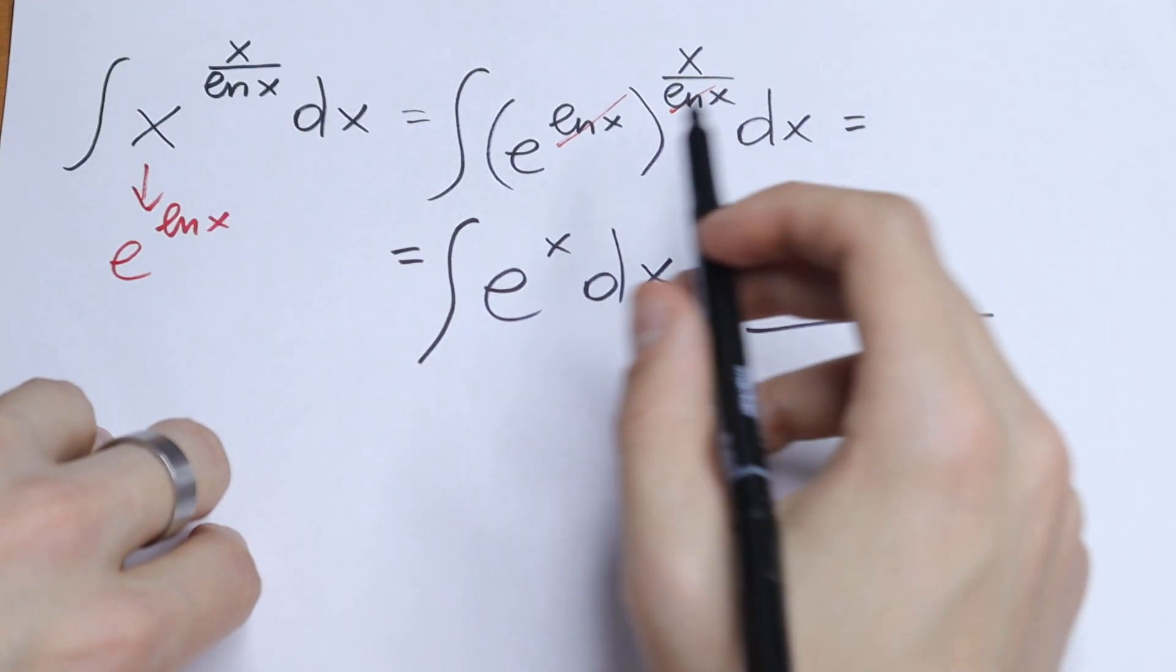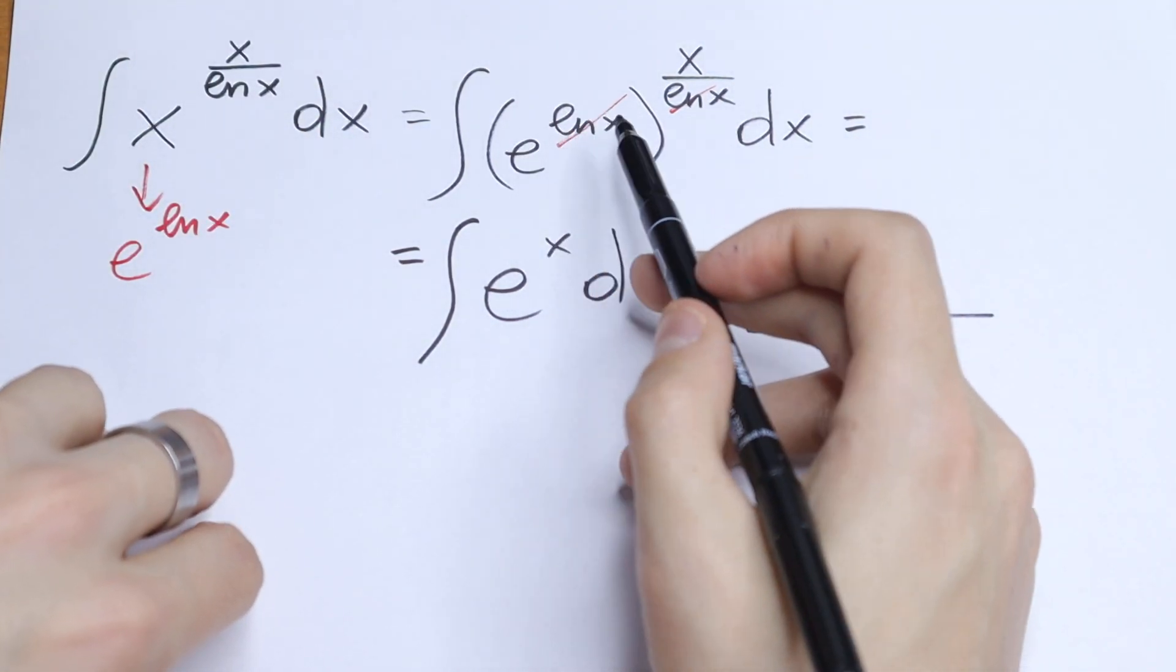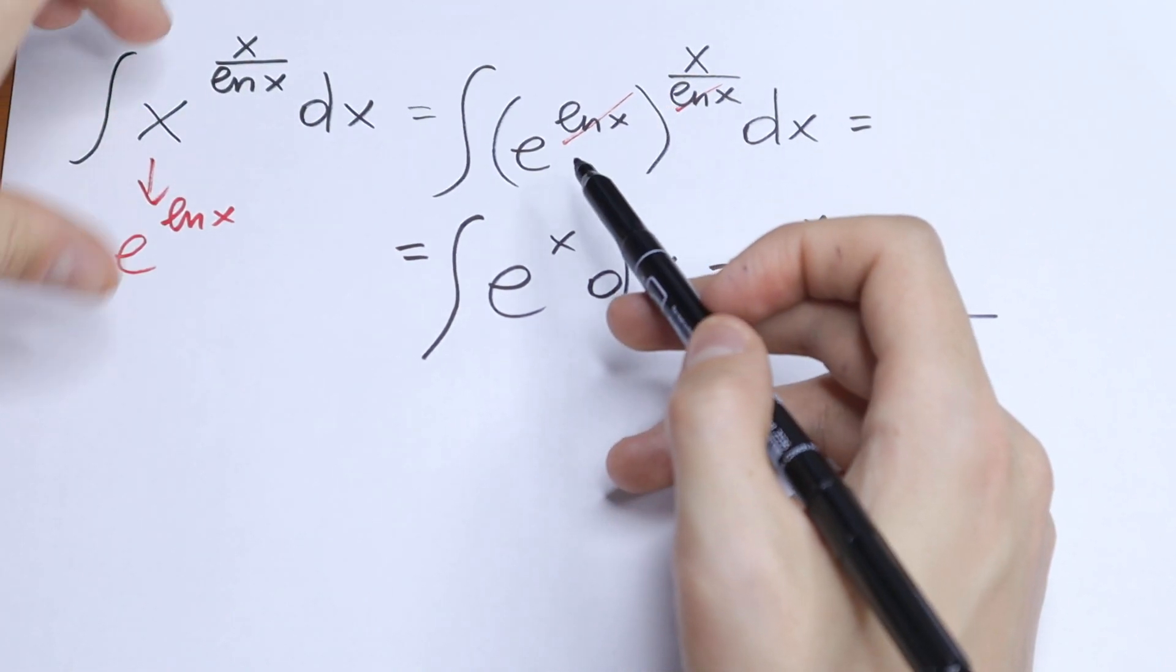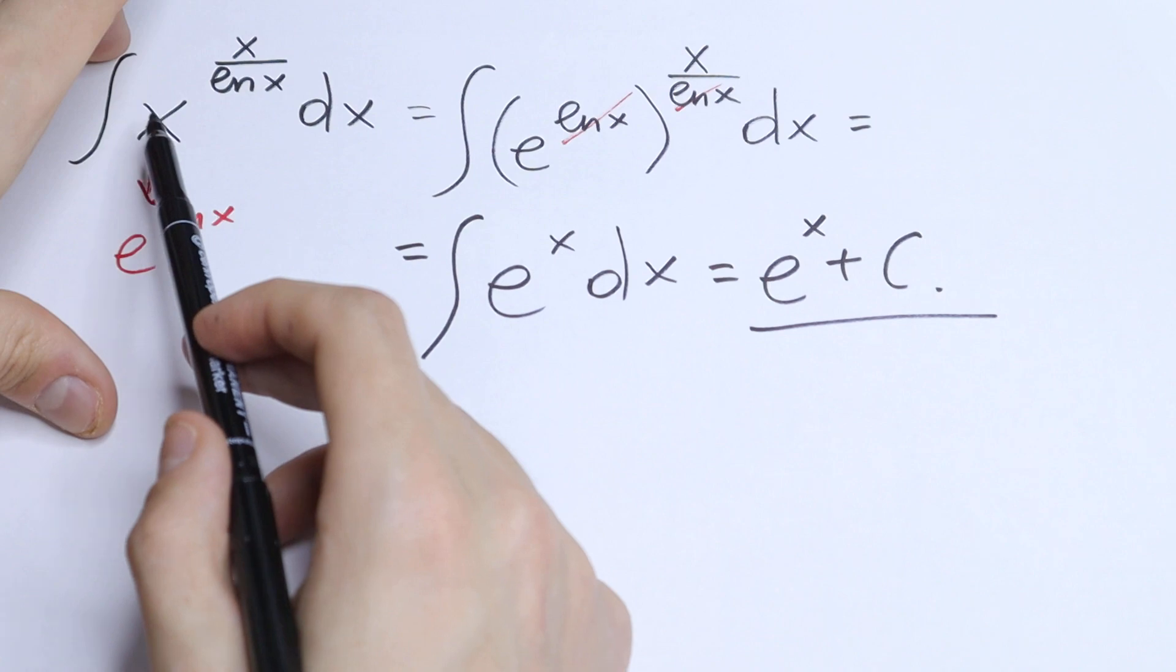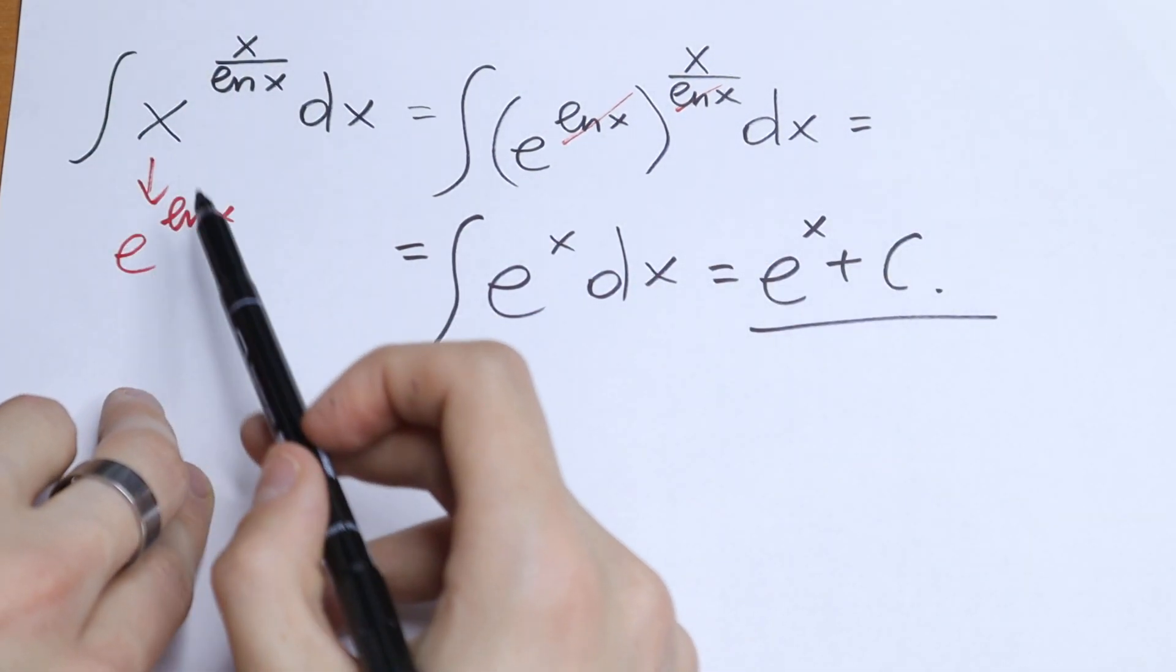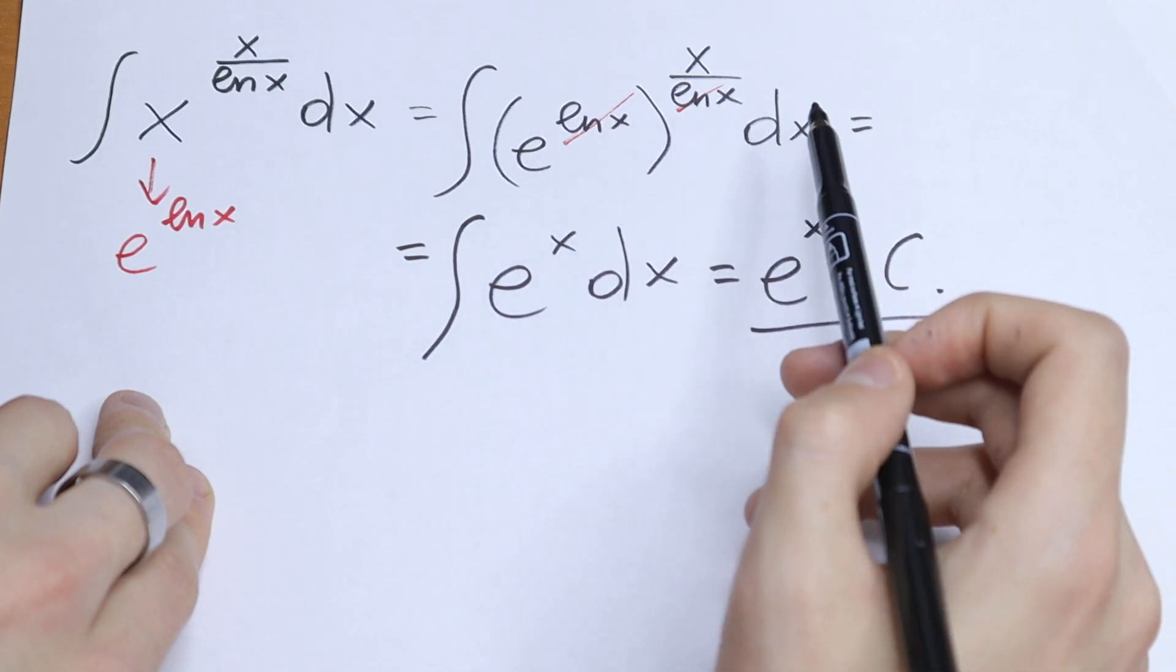So if you forget this change right here, of course this integral will be really complicated for you because we will have a really hard integral. We change this x to e to the power natural log x.